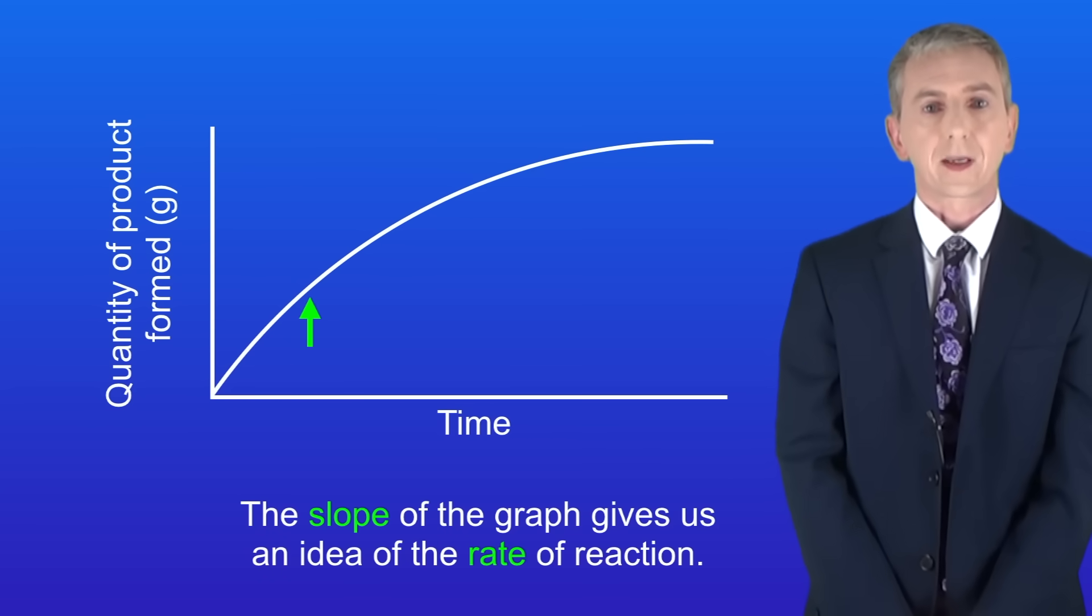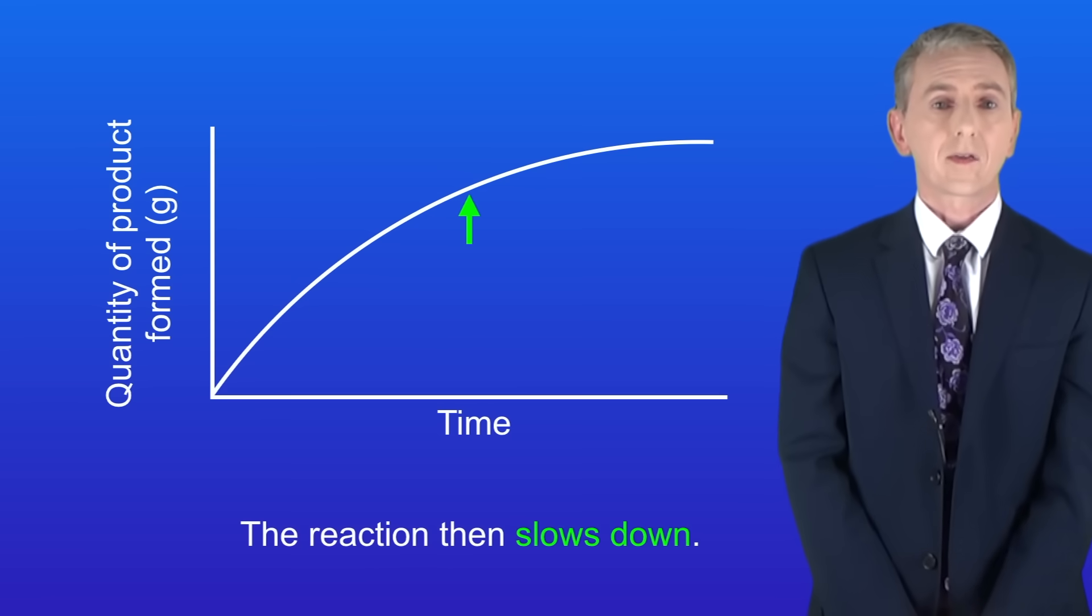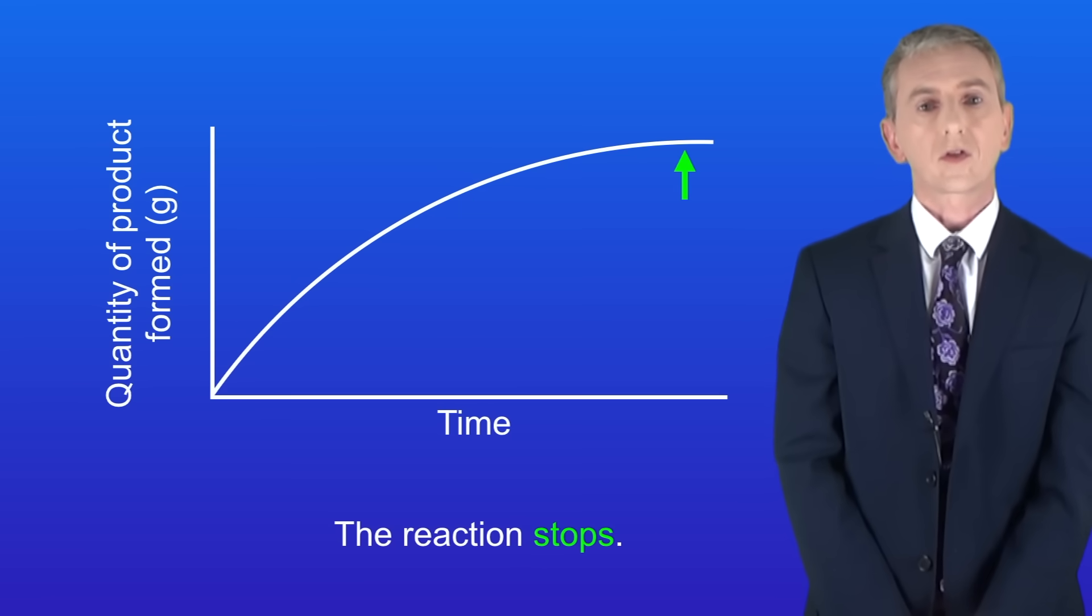Remember that the slope of the graph gives us an idea of the rate of the reaction. Initially the reaction is extremely fast. The reaction then slows down and finally the reaction stops.